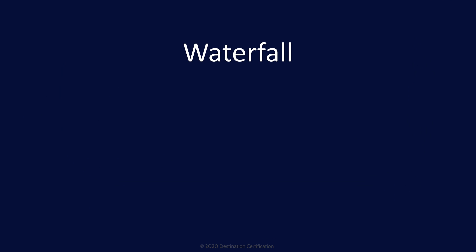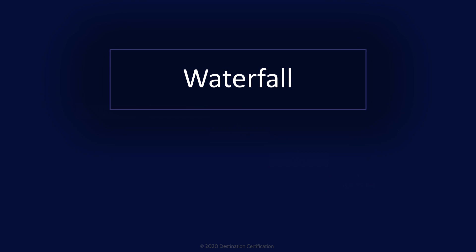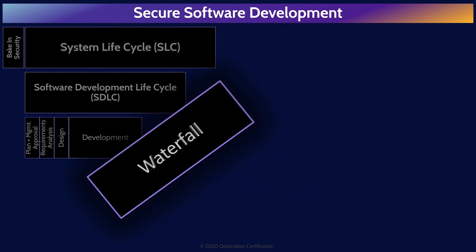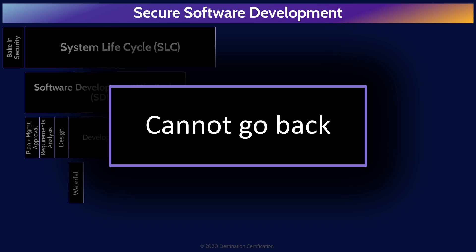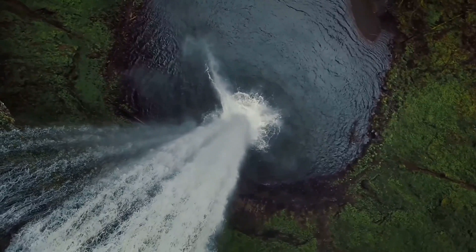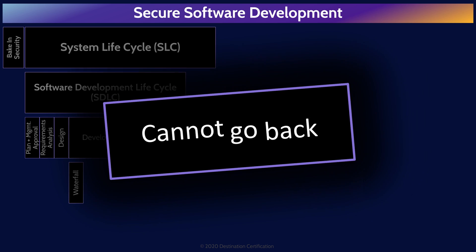Waterfall begins with a plan, then defining requirements, building, testing, and finally releasing. The defining characteristic of waterfall is that each of these phases are conducted one after another — you cannot go backwards. Water can only flow downhill. So if you discover as part of a two-year waterfall project that you missed a requirement, you can't go back and redefine the requirements. You must proceed through build, test, and release, and then include the missed requirements as part of the next waterfall cycle.